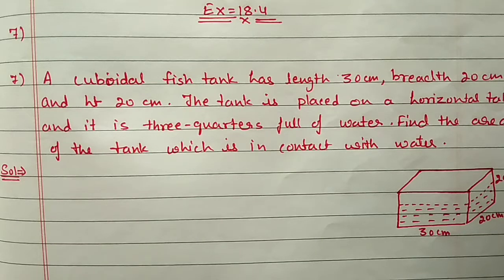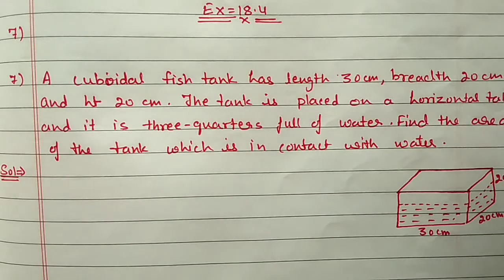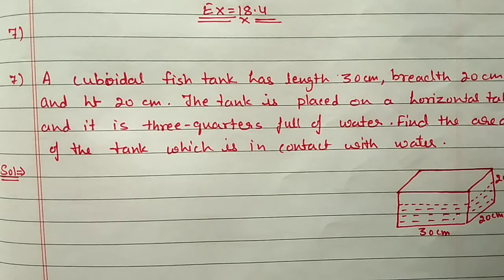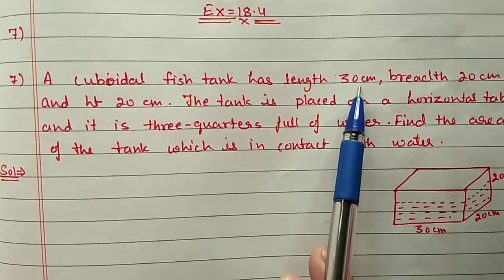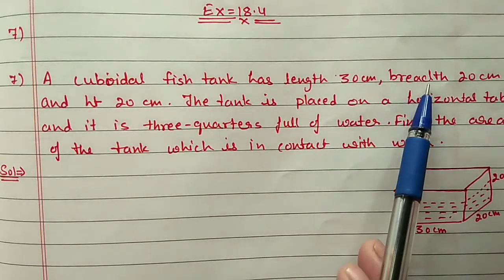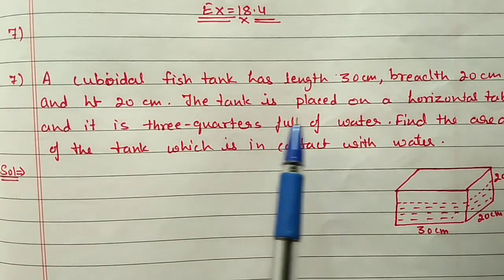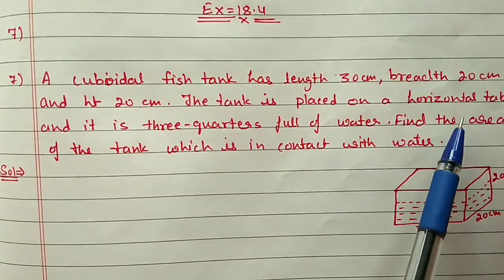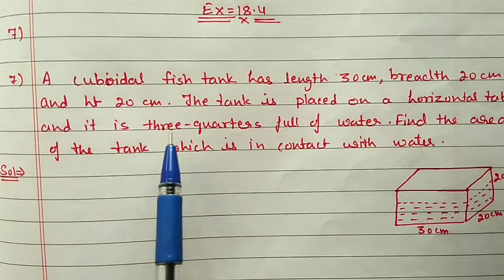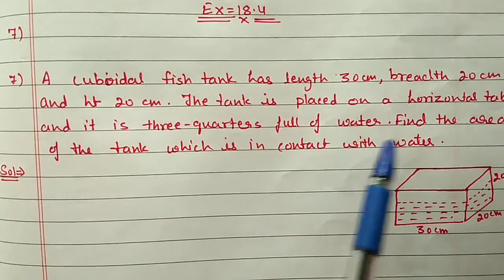Hello students, we are doing Chapter 18 Mensuration, Exercise 18.4. In the last video we did till question number 6, and now we are starting from question number 7. A cuboidal fish tank has length 30 cm, breadth 20 cm, and height 20 cm. The tank is placed on a horizontal table and it is three-quarters full of water.